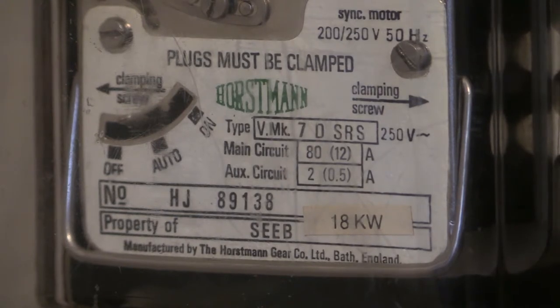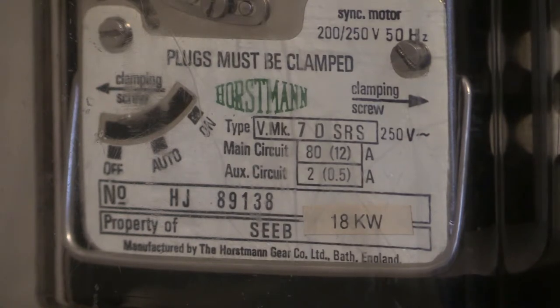It can also be seen that the capacities for the time switch are detailed on the specification plate where it says main circuit 80 amps and auxiliary circuit is 2 amps. I have reason to believe that the numbering in brackets for each contact is the inductive load, so it'll be 12 amp inductive for the main circuit and half an amp inductive for auxiliary circuits. Also on the specification plate you can see a little lever sticking through where it says off, auto, and on. That is a manual option, but these time switches are installed by electricity boards and are sealed and are not accessible to the electricity user.